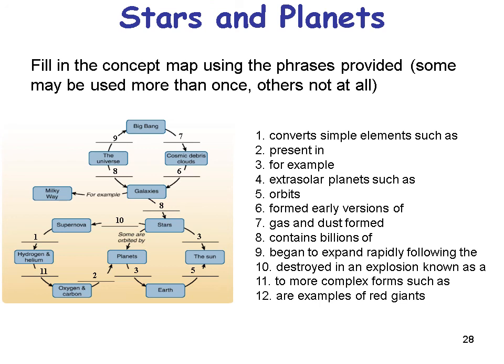These concept maps are helpful for putting concepts together in Earth science, where we're talking about systems. A supernova converts simple elements like hydrogen and helium into more complex forms such as carbon and oxygen, which are present in planets. An example of a planet is Earth, which orbits the sun.